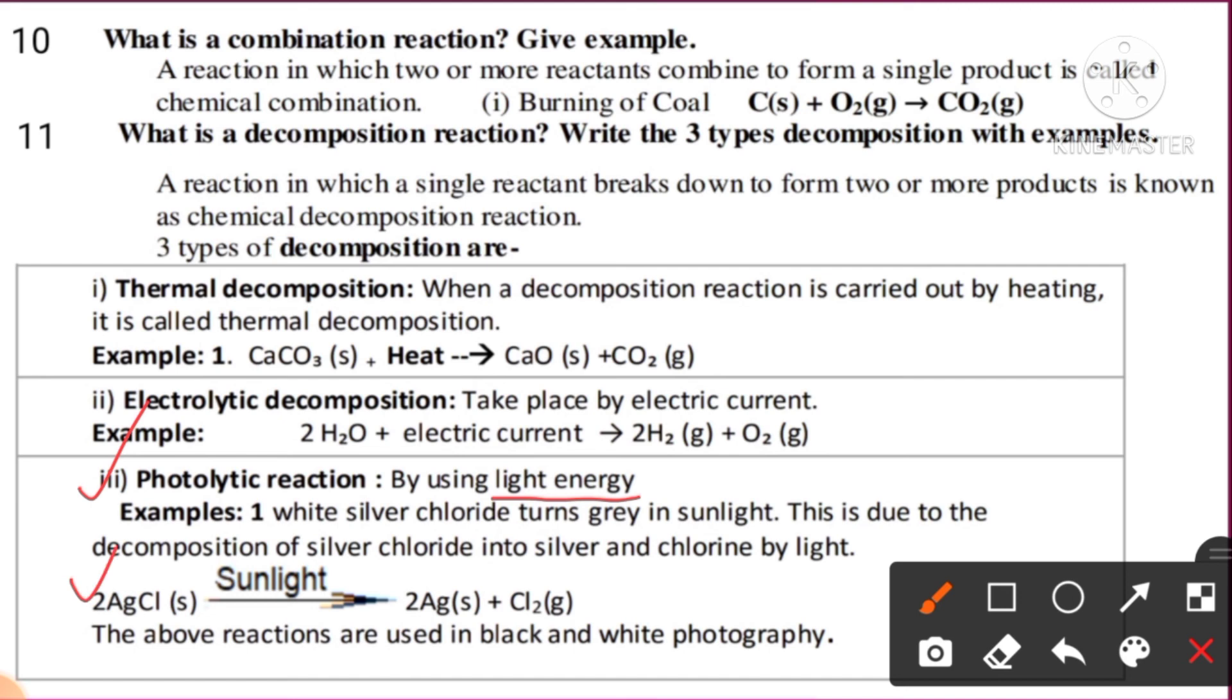Check the chemical reaction: two molecules of silver chloride are exposed to sunlight, and it decomposes into silver and chlorine gas. The above reaction is used in black and white photography also. This is a use of decomposition reactions.